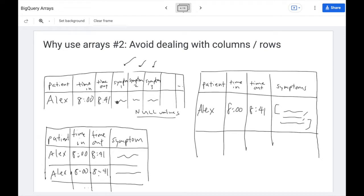Your SQL queries will have to deal with all these issues. Now let's suppose instead you have one row per symptom that's reported. Well, now you have a lot of redundant information in your data set. You're going to have Alex clocking in at 8, clocking out at 8:41, repeated many times, one per symptom.